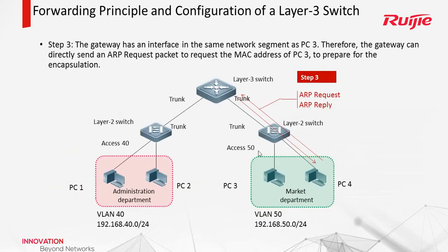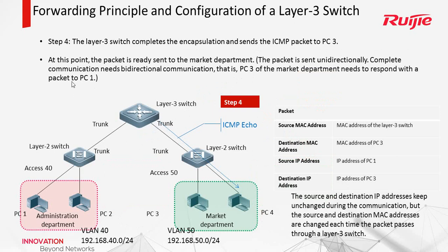The layer 3 switch will send an ARP request to PC3, and PC3 will reply to it. After the ARP exchange, the layer 3 switch can forward the ICMP packet — it helps PC1 forward the ICMP packet, since it received it but had not forwarded it yet. This time, the source MAC address is the switch itself, and the destination MAC address is PC3. Source IP is PC1, and destination IP is PC3. Through this process, we can find that the source and destination IP addresses remain unchanged.